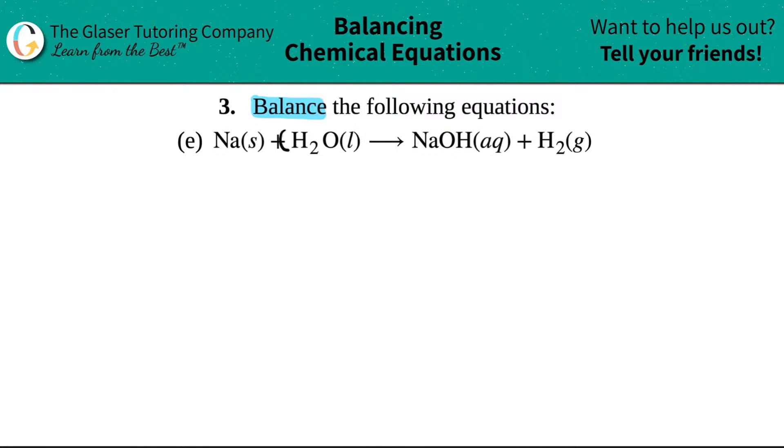So I have Na plus H2O and I'm yielding NaOH and then H2. Notice that I don't put the states in because honestly who cares what state they are. That has nothing to do with balancing, so you can just disregard these.